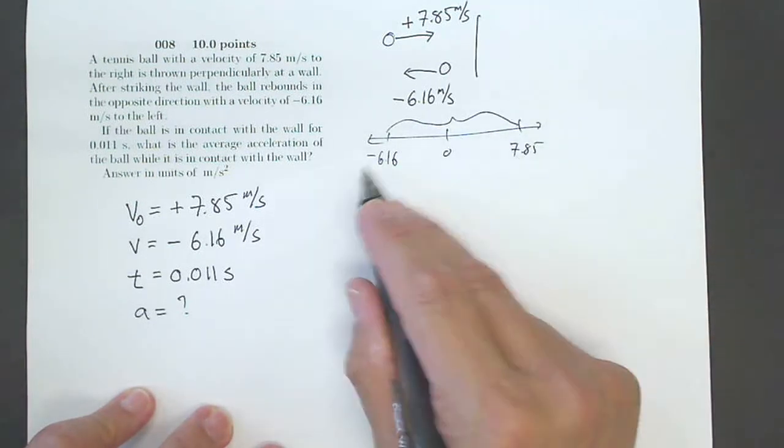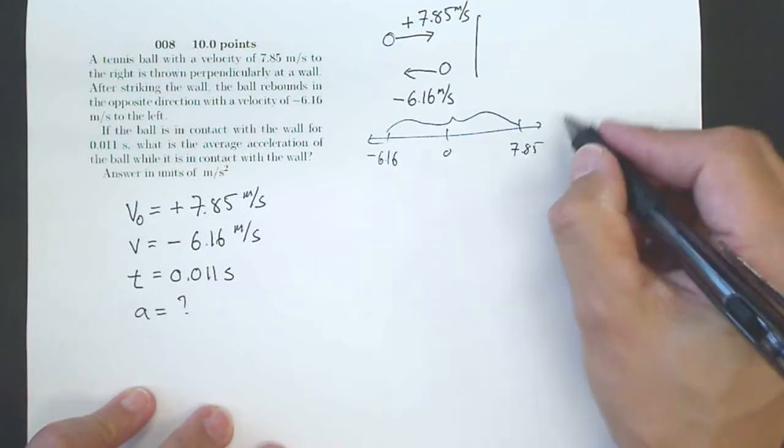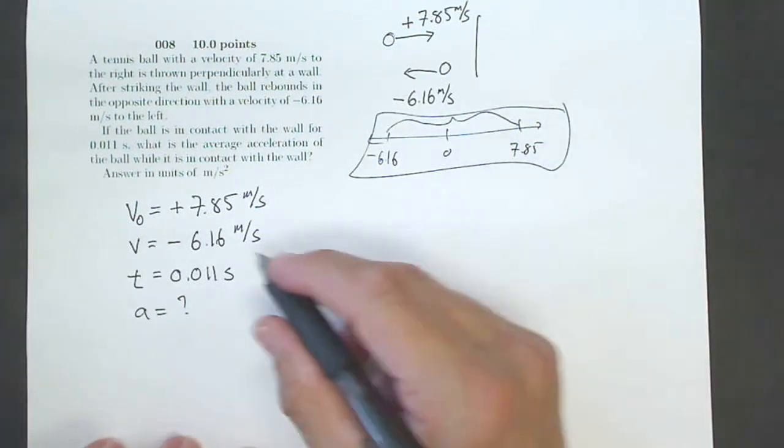That's going to be big. It's going to be 7 plus 6. It's going to be about 13, 14-ish, right? So keep that in mind as we do this problem.